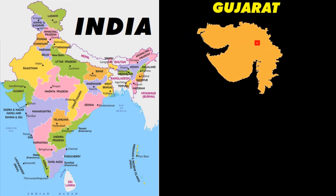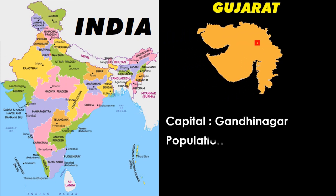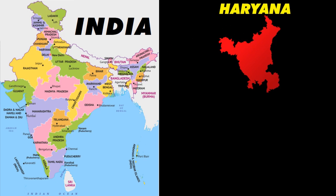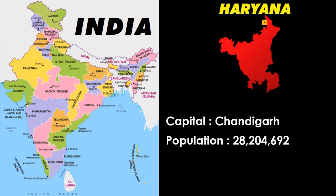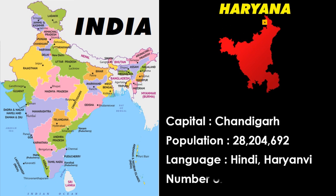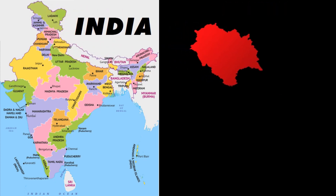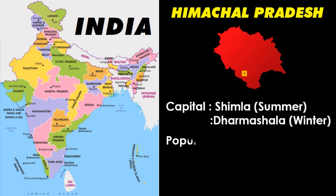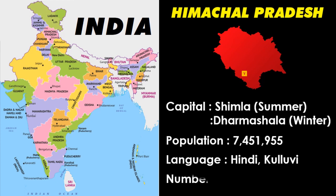Gujarat: capital Gandhinagar, language Gujarati. Haryana: capital Chandigarh, language Hindi and Haryanvi. Himachal Pradesh: capital Shimla in summer, Dharamshala in winter, language Hindi and Kullvi.